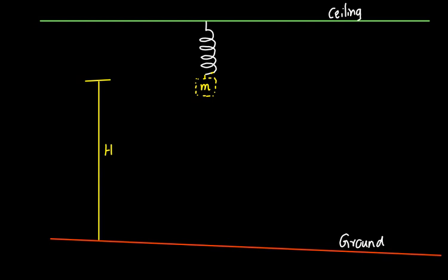The moment I gradually release the mass, it is going to stretch the spring and the spring gets deflected. Initially the value of X is zero, and it gradually increases as the mass stretches the spring. You may use positive values for displacement in the downward direction and negative for the upward direction — as long as you are consistent with the signs, you will get the same answer.